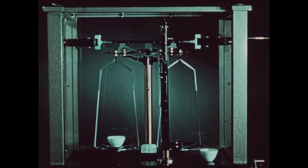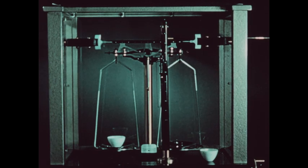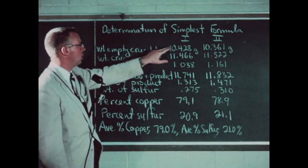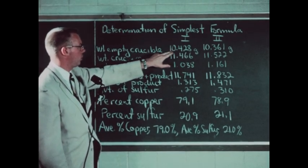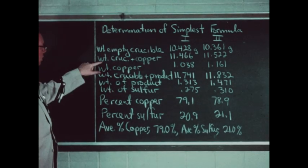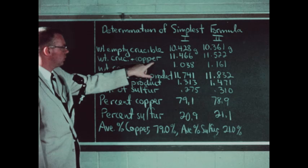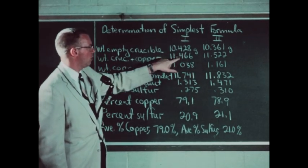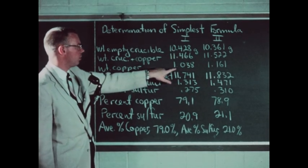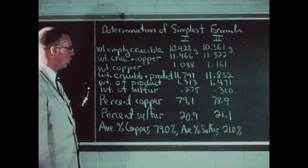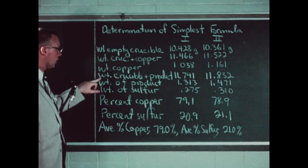We will now proceed to calculate the formula for this sulfide of copper using the experimental data. The weight of the empty crucibles: crucible one weighed 10.428 grams, crucible two 10.361 grams. The crucibles plus the copper weighed 11.466 and 11.522 grams. By subtraction, the weight of the copper used in each sample is 1.038 and 1.161 grams. Then after adding the sulfur and reacting it with the copper to remove the excess sulfur,